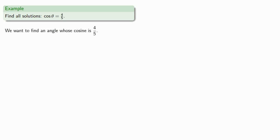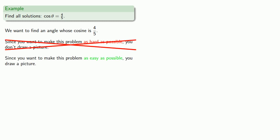We want to find an angle whose cosine is 4 fifths. Since you want to make this problem as hard as possible, you don't draw a picture. Wait a minute. Wrong script. Since you want to make this problem as easy as possible, you draw a picture.